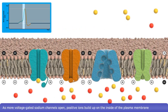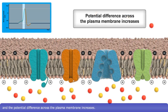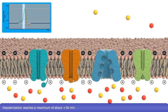As more voltage-gated sodium channels open, positive ions build up on the inside of the plasma membrane, and the potential difference across the plasma membrane increases. Depolarization reaches a maximum of about plus 30 millivolts.